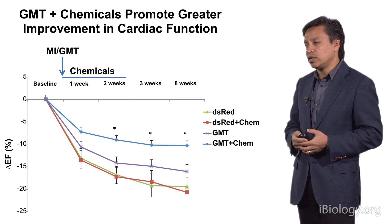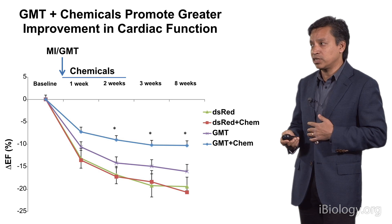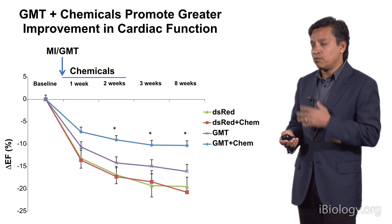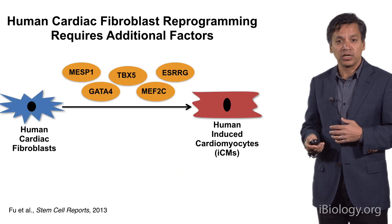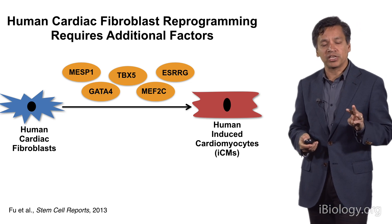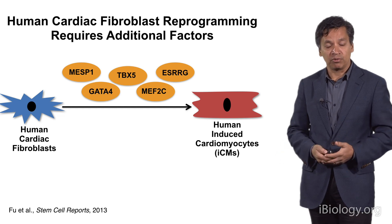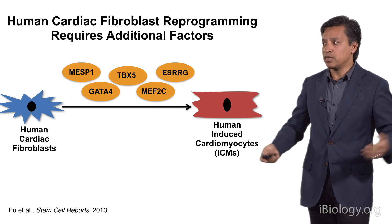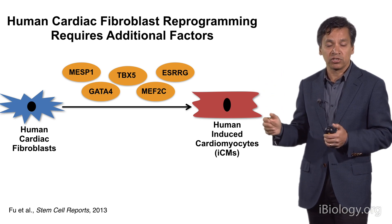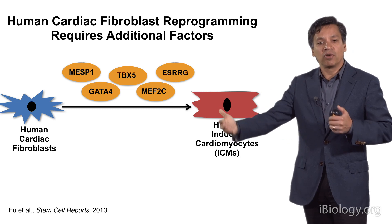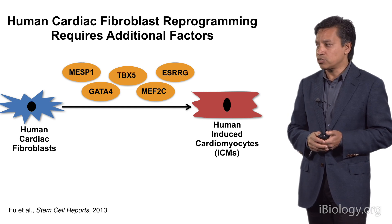We're hopeful we've got a better combination that can improve heart function even more significantly. But what I've shown you so far is just mouse, and obviously we'd like to translate this towards the human condition. It turned out that the three genes in mouse actually did nothing in a human cardiac fibroblast. We had to go back and ask what we were missing, and it turns out that the addition of two more transcription factors was enough to reprogram a human cardiac fibroblast to be more like a human-induced cardiac myocyte.